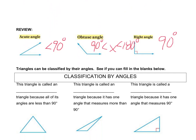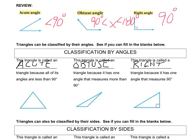Triangles are classified by their angles, and they can also be classified by their sides, which we will talk about in a minute. See if you can fill in the blanks below — I'm going to pause the video and then come back and check. The first one is an acute triangle, as all of their angles are less than 90 degrees. The obtuse triangle has one angle that is more than 90 degrees. And the right triangle has one angle that measures 90 degrees.